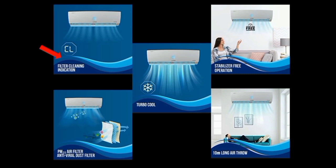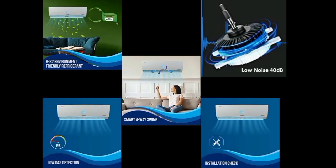This AC supports stabilizer-free operation — there is no need for an external stabilizer. It can handle power fluctuations in your area easily, protecting against voltage damage. The AC also has a 10-meter air throw distance. It supports 4-direction airflow — up, down, left, and right — so it can distribute cool air throughout the entire room evenly.